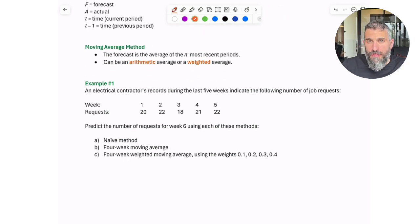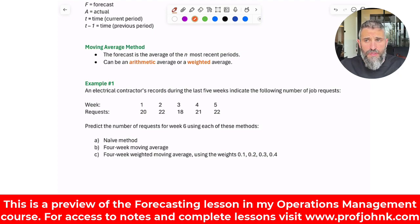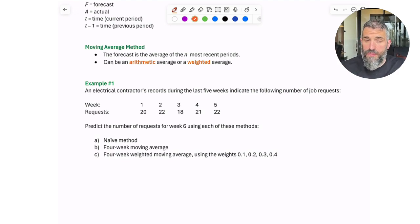And then you've got moving averages. Moving averages just means you're taking an average of the most recent periods. It could be a three-period moving average, a four-period moving average, a six-period moving average. The point is that you're taking the average of the n most recent periods. It could be an arithmetic average, which is just a regular average, adding them up and dividing by n. But it could also be a weighted average. A weighted average is what you would use if you're trying to put more emphasis on certain periods.